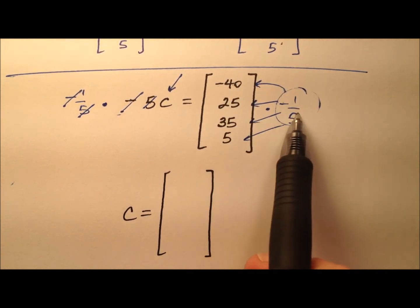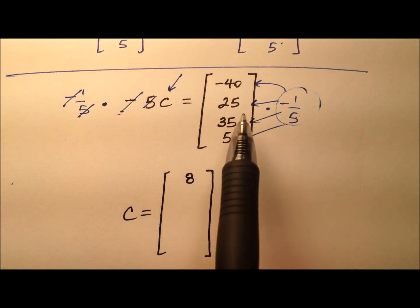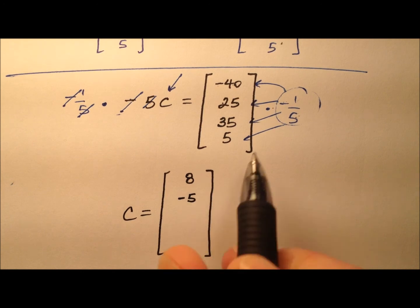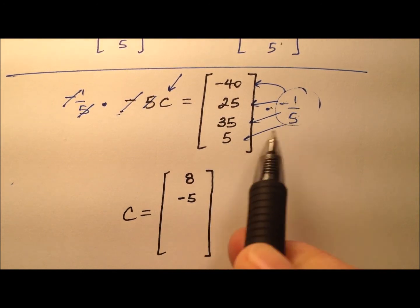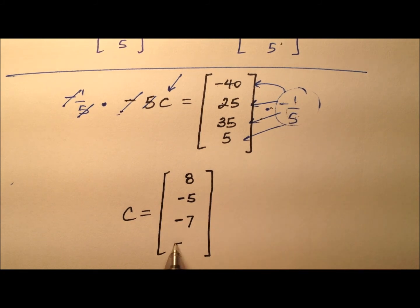Negative 40 divided by negative 5, in either case, it's going to be 8 for that first entry. 25 times negative 1 fifth will be negative 5. 35 times negative 1 fifth, negative 7. And then 5 times negative 1 fifth will be negative 1.